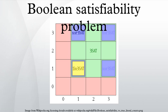A literal is either a variable, then called a positive literal, or the negation of a variable, then called a negative literal. A clause is a disjunction of literals. A clause is called a Horn clause if it contains at most one positive literal. A formula is in conjunctive normal form (CNF) if it is a conjunction of clauses.